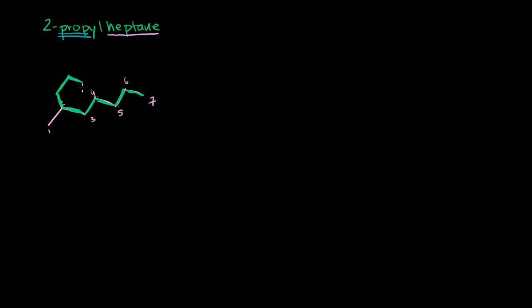And so you would number it. You start numbering closest to the group that's attached. So 1, 2, 3, 4, 5, 6, 7, 8, 9. So you have nine carbons in your backbone, so we're dealing with nonane.